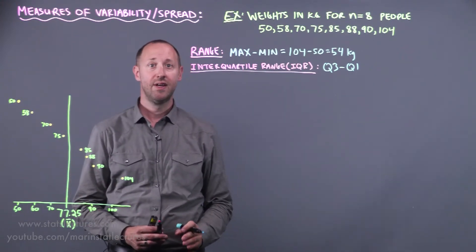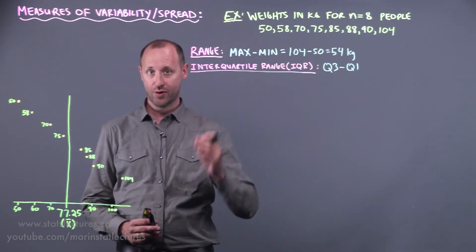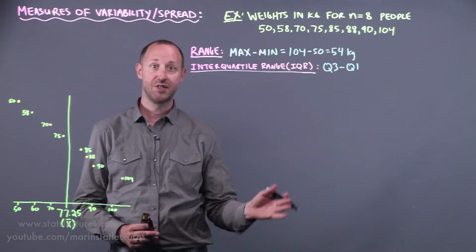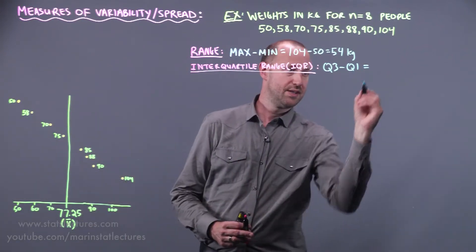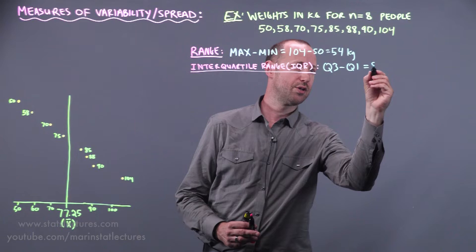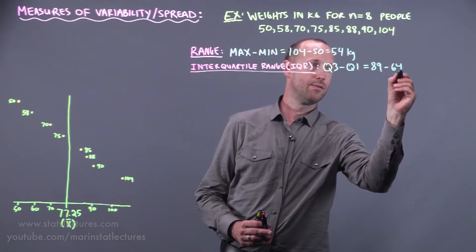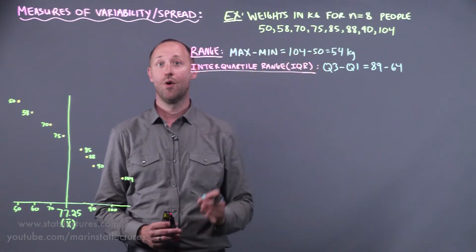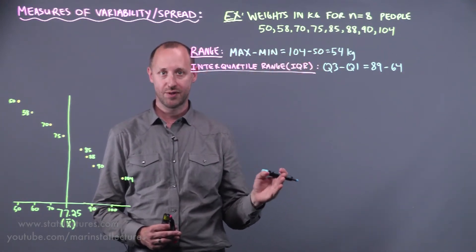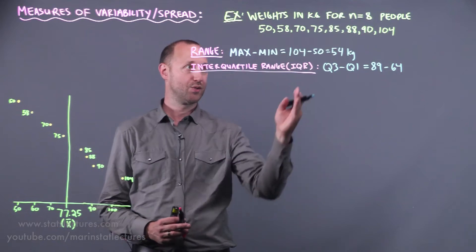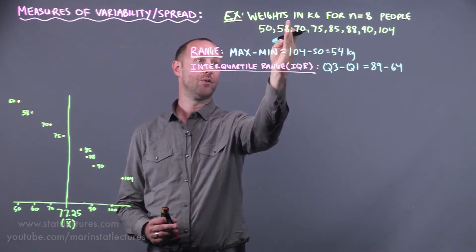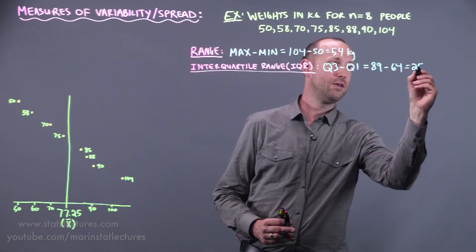If you recall in previous videos we talked about quartiles. The third quartile is the value that has three quarters or 75 percent of observations below it. In this example we can work it out to be roughly 89. The first quartile is 64, which has one quarter or 25 percent of observations below it. So that works out to be 25.